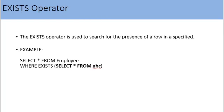The EXISTS operator is used to search for the presence of a row in a specified table that meets certain criteria. A subquery is provided to EXISTS — if the subquery returns one or more rows, it returns true, otherwise false. Let's see the example query.